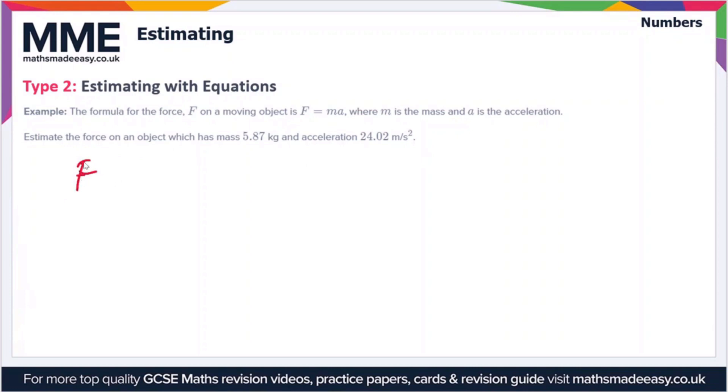So let's just rewrite the equation first of all. That's F equals MA. So M is the mass.